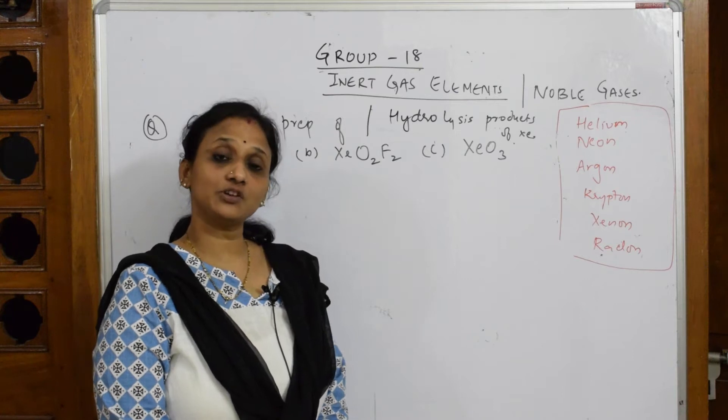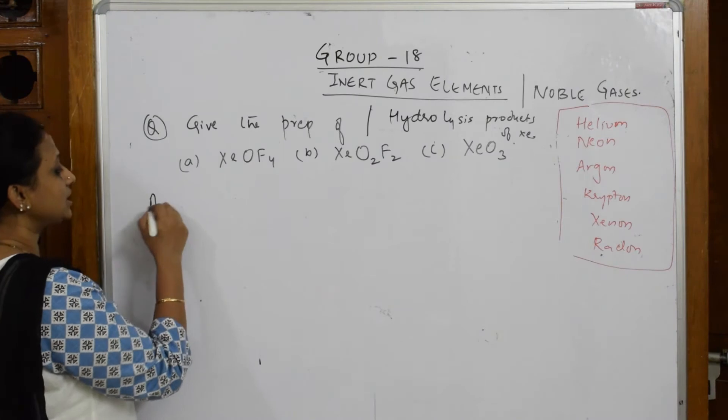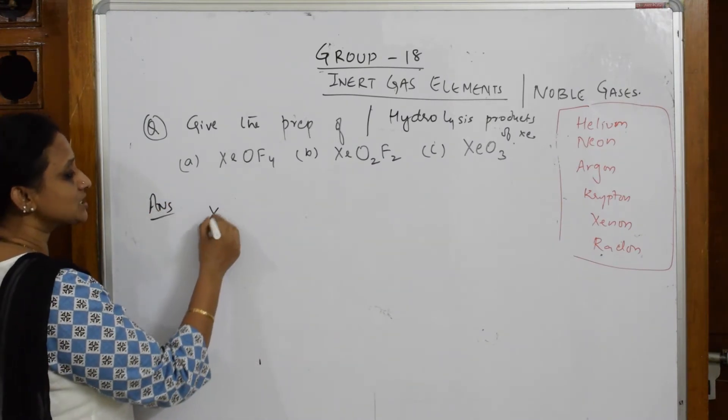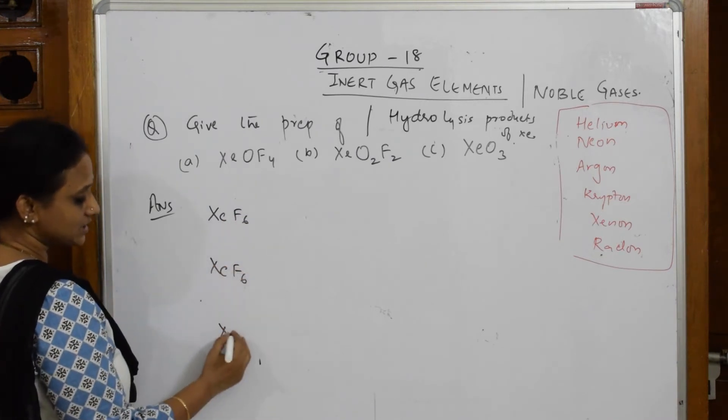We are going to take three XeF6 and pick up three water molecules. First, write XeF6 everywhere. We made this from xenon and fluorides at 673 Kelvin at 60 to 70 bar.